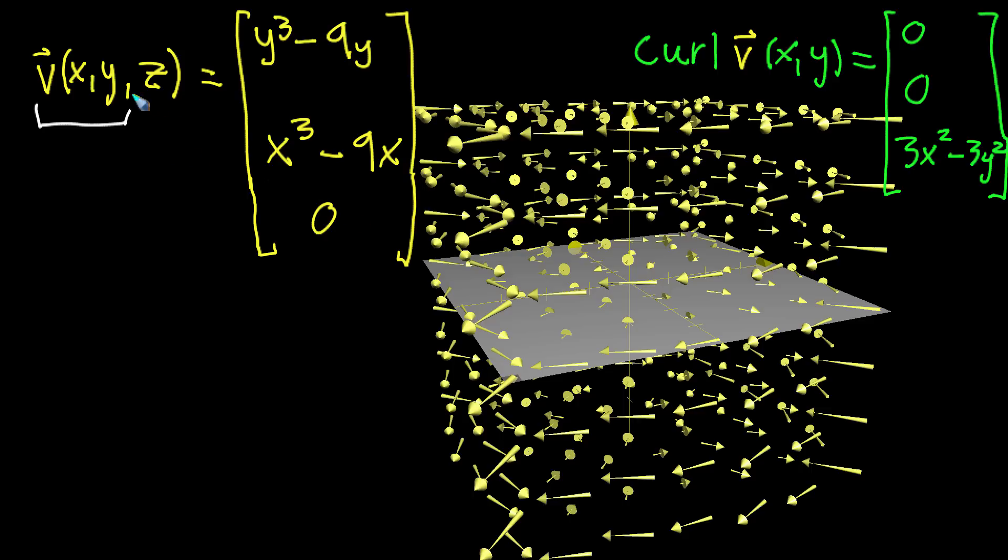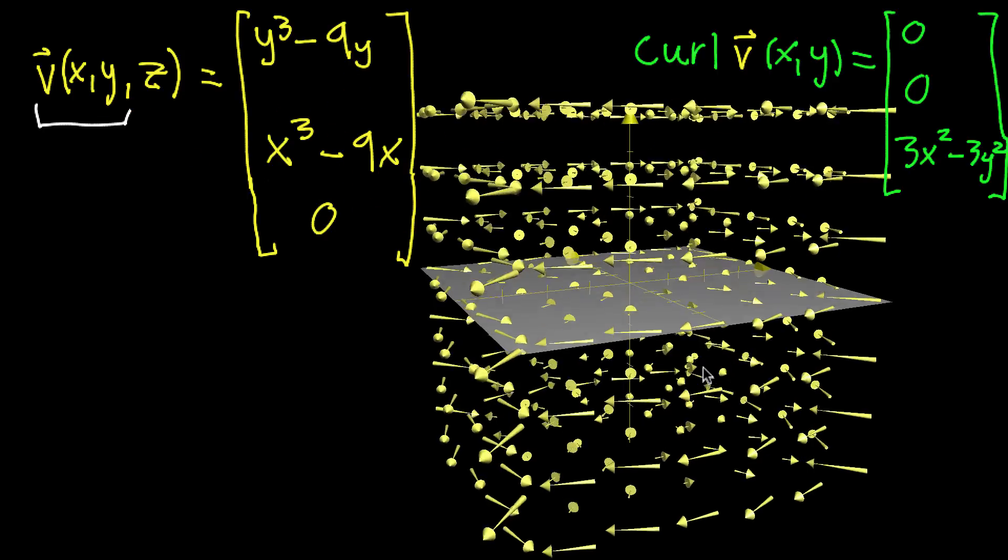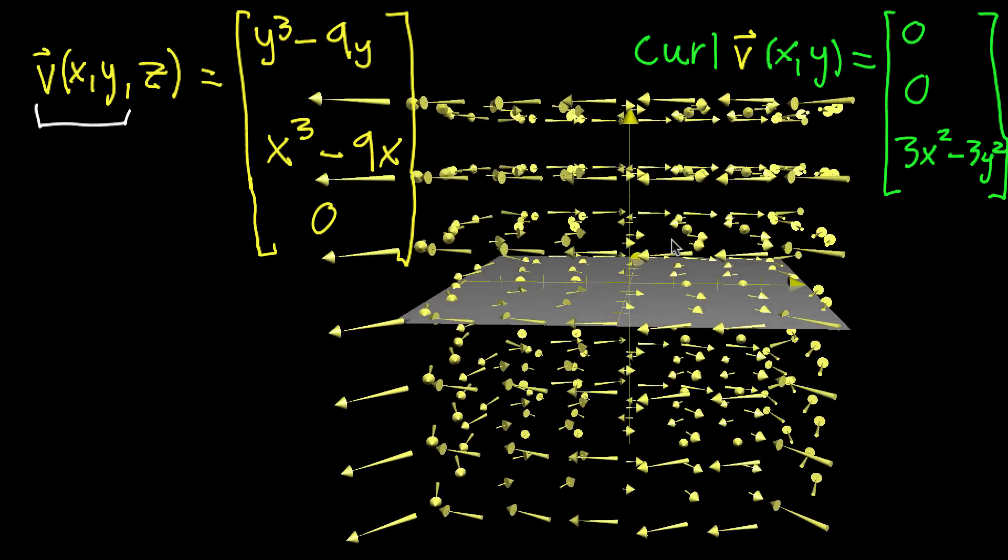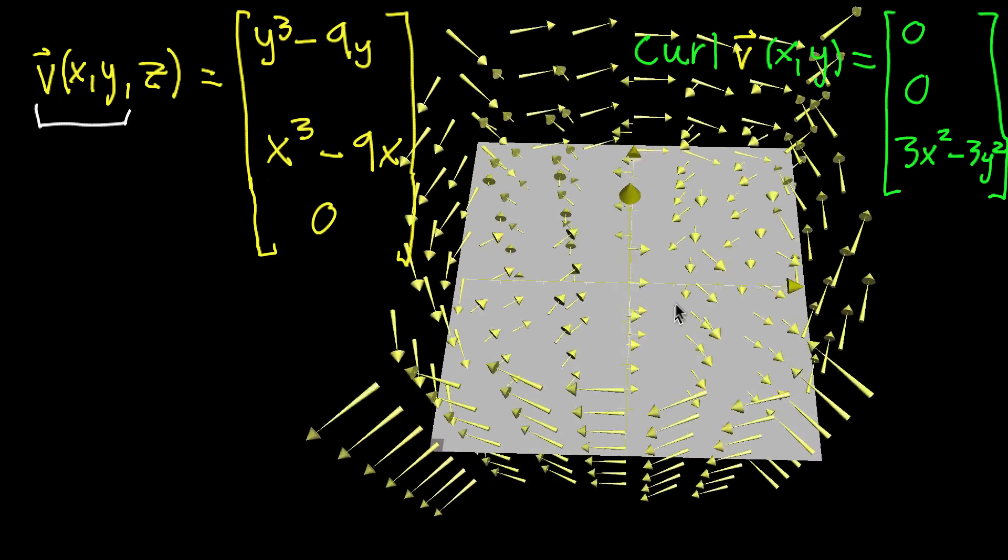And the fact that you have a z in the input, but the output doesn't depend on the z, corresponds to the fact that all the slices are the same. As you change the z direction, the vectors won't change at all, they're just carbon copies of each other.